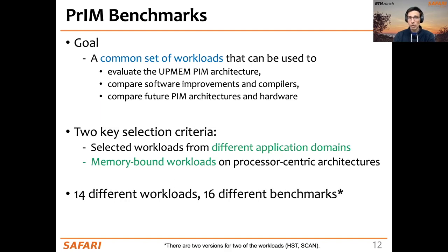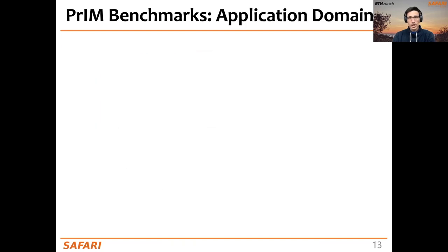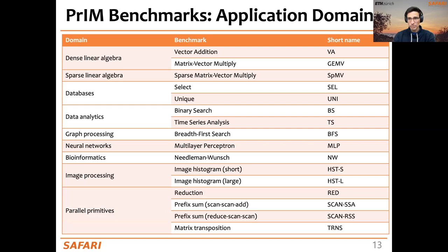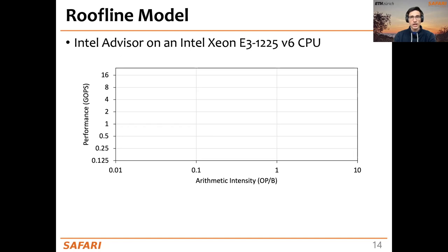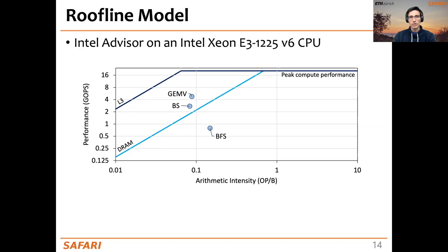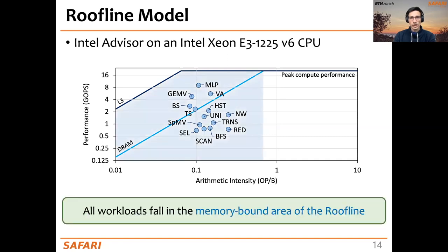In total, the PIM benchmark suite contains 14 different workloads and 16 benchmarks, since two workloads have two versions. These cover dense and sparse linear algebra, databases, data analytics, graph processing, neural networks, and more. All 14 workloads fall in the memory-bound area of the roofline model obtained with Intel Advisor on an Intel Xeon CPU, making them expected candidates for processing in-memory systems.